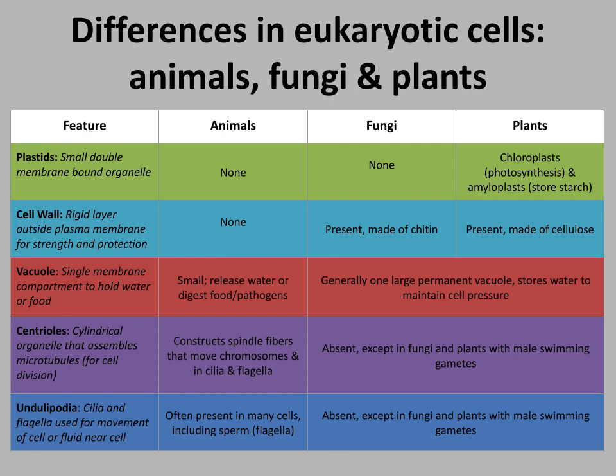Vacuoles differ significantly between cell types. In animal cells they are small and typically used for storage of food or water, whereas in plants there is usually one large central vacuole. Centrioles are present in animal cells but not in plants. Cilia and flagella are found in animal cells — a sperm cell with a flagella for swimming is a good example — and are less common in plant and fungi cells.